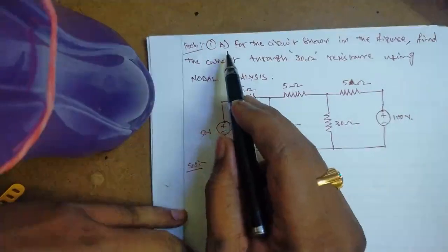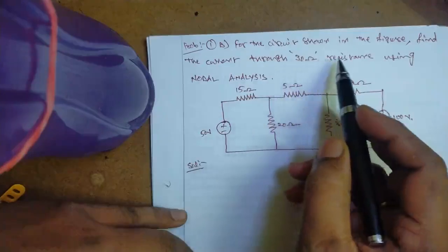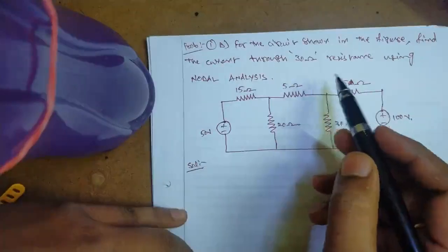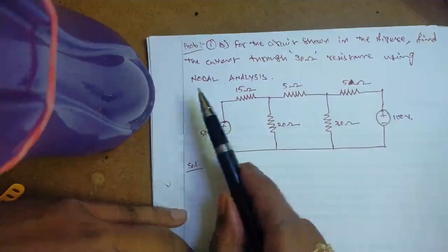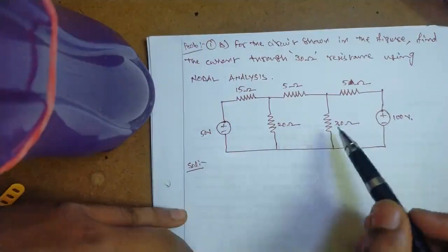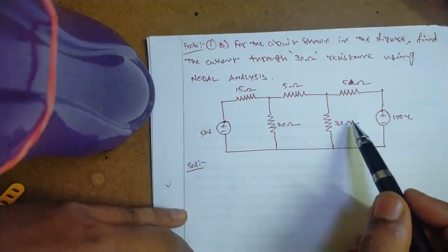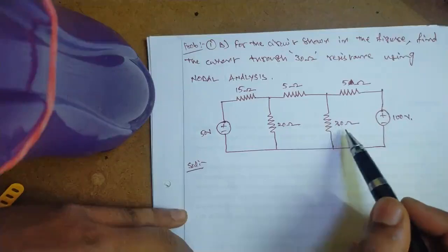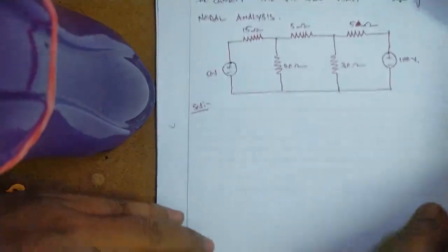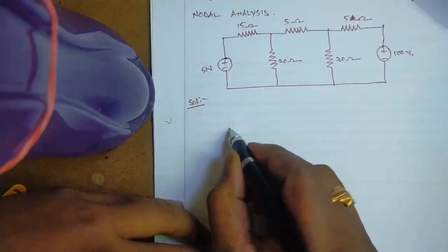Problem 1b: For the circuit shown in the figure, find the current through the 30 ohm resistance using nodal analysis. This is the 30 ohm resistor in the given circuit, and we have to find the current passing through it using nodal analysis.